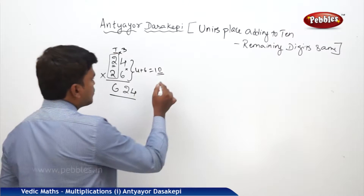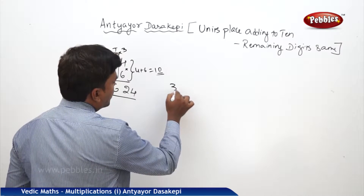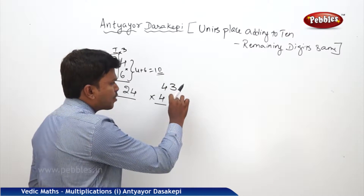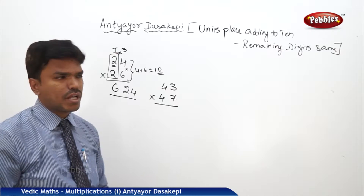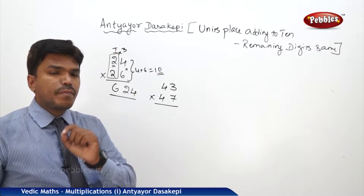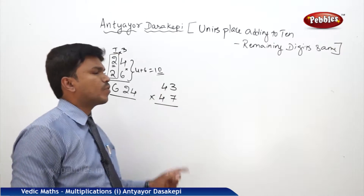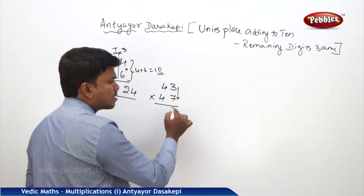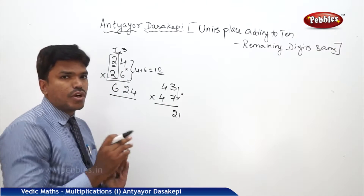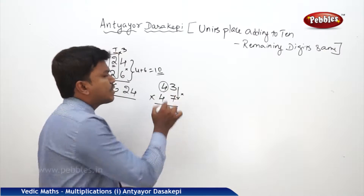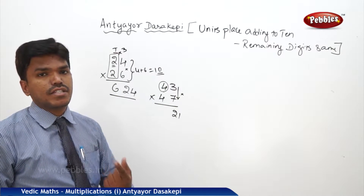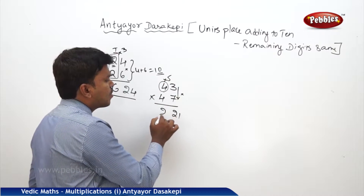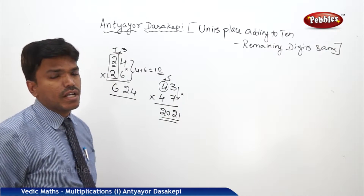One more example. Suppose you want to multiply 43 into 47. Units place: 3 plus 7 equals 10 — first condition satisfied. Tens place: 4 and 4 are the same — second condition satisfied. Multiply the units digits: 3 into 7 is 21. Then multiply the remaining digit 4 with its next number 5: 4 into 5 is 20. So your answer is 2021.